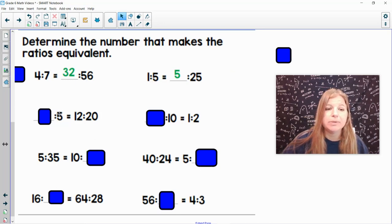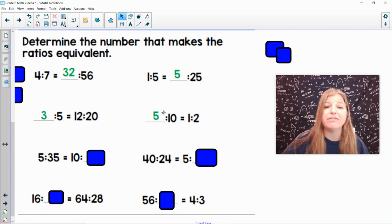All right. In this one, 5 times 4 is 20. What times 4 gets me 12? 3. Blank to 10 equals 1 to 2. 10 divided by 5 will get me 2. So what number divided by 5 will get me 1? 5. And look at that. 5 to 10 is equal to 1 to 2. They're both 1 half.